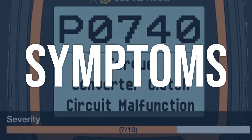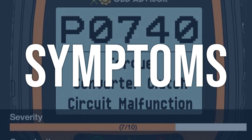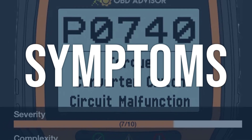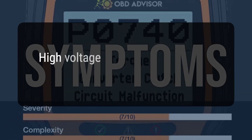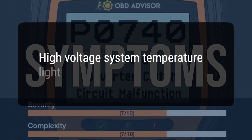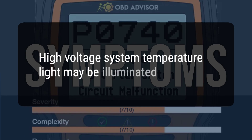When you encounter this OBD error, the vehicle typically exhibits the following symptoms: the high-voltage system temperature light may be illuminated.